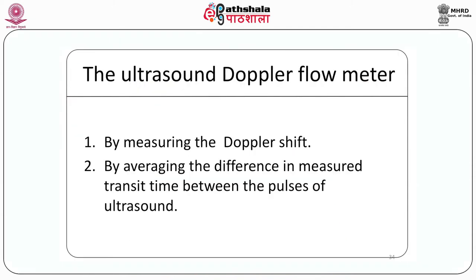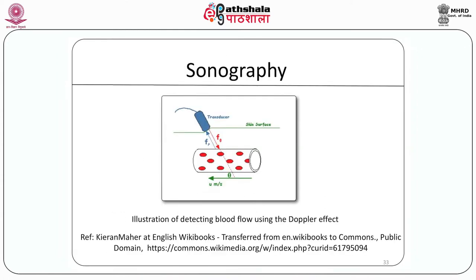There are two methods which ultrasonography applies for measurement of blood flow: first, based on the Doppler shift principle, and second, based on calculation of transit time. This setup shows a schematic diagram to record blood flow by using ultrasonic Doppler.